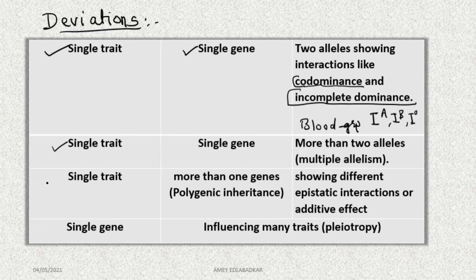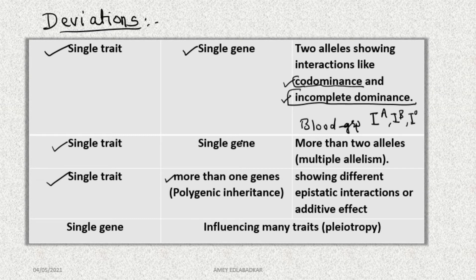After that, another deviation was found: single trait, but now the character is under the control of more than one gene. Until now we had single gene, 2 alleles, one dominant — that was Mendelian. Then: single trait, single gene, but two equally dominant, that is incompletely dominant. Then: single trait, single gene, but more than two alleles — that is multiple alleles.